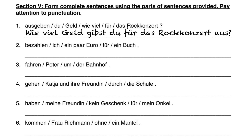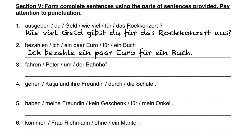Nummer zwei: we start with our subject and conjugated verb. The subject is ich, and we use bezahle. I spend a few euros for a book: Ich bezahle ein paar Euro für ein Buch. Nummer drei: the subject is Peter, then a conjugated form of fahren — fährt, which has an umlaut because it's an irregular verb. And then um den Bahnhof at the end because it's an accusative preposition. Peter fährt um den Bahnhof.